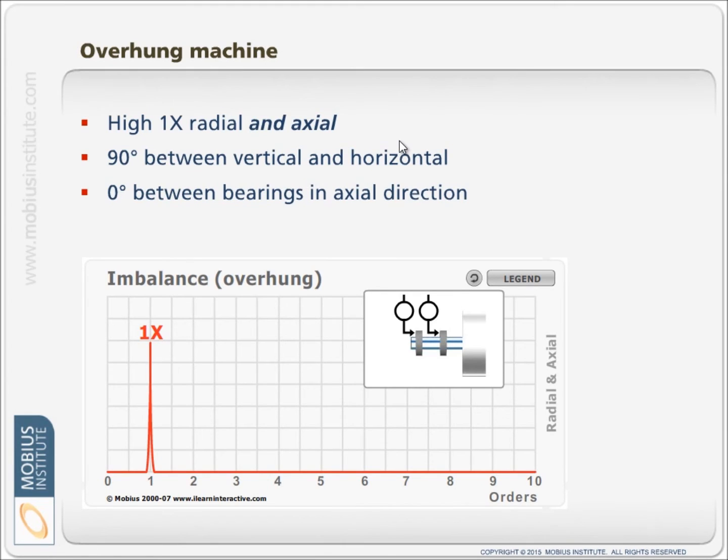And we can look for the 90-degree phase difference between vertical and horizontal, and we can look at the zero-degree phase difference when measuring the two bearings in the axial direction.